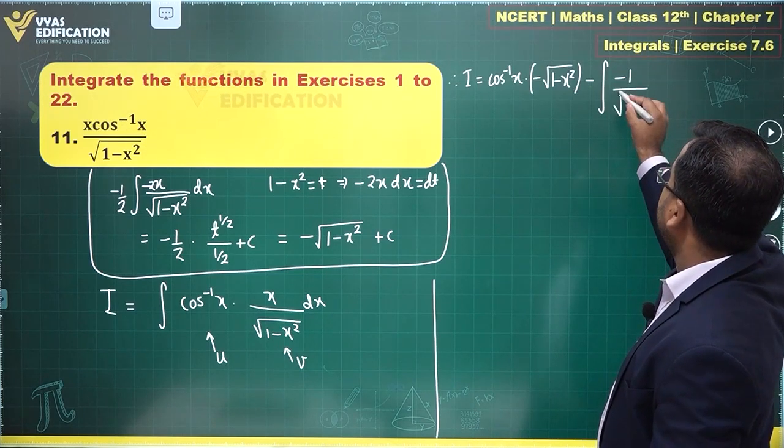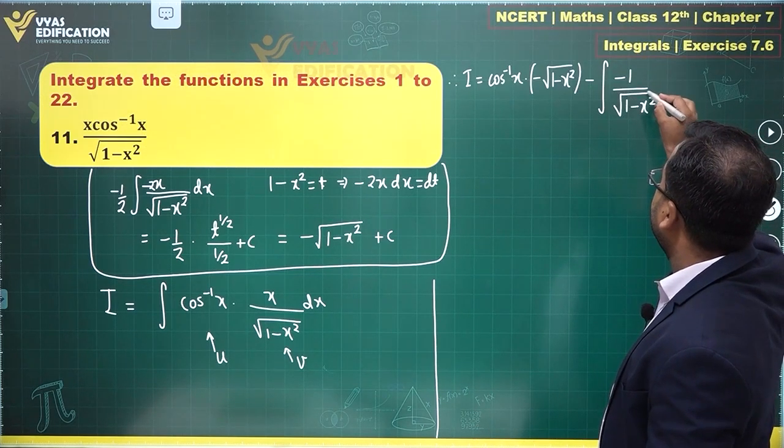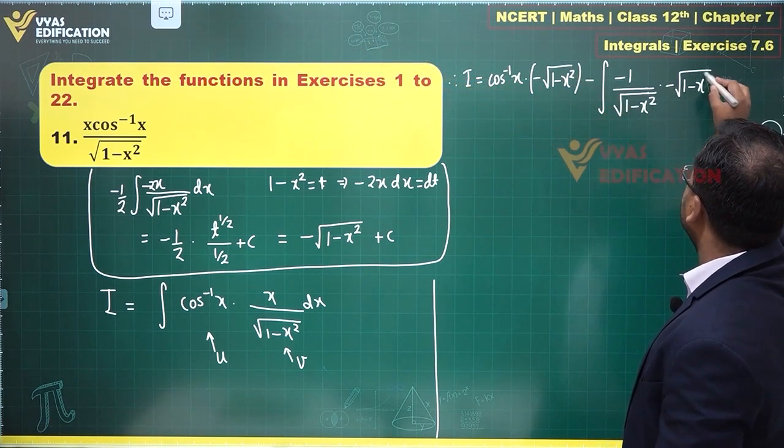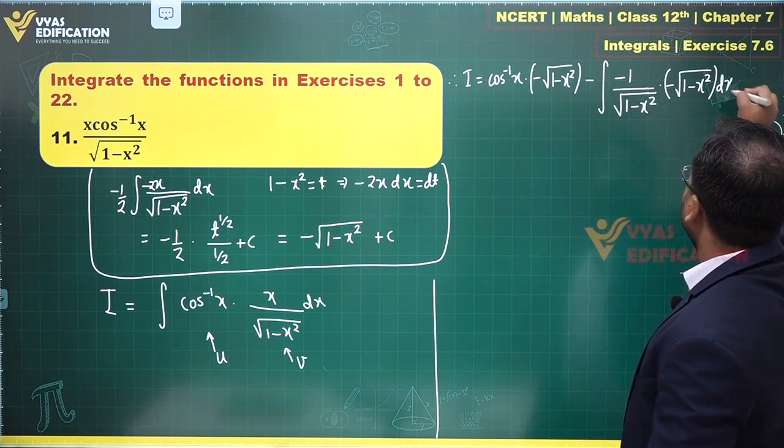It's written in minus integral of derivative of cos inverse x. What is that? Minus 1 upon root of 1 minus x square. And integral will be minus under root of 1 minus x square dx is what I'll get.